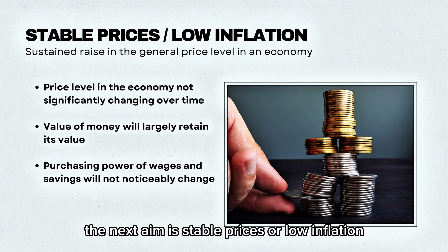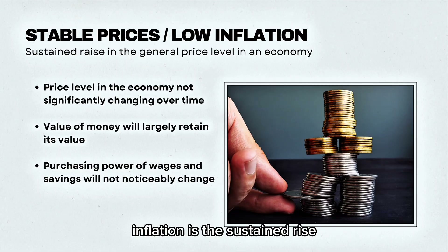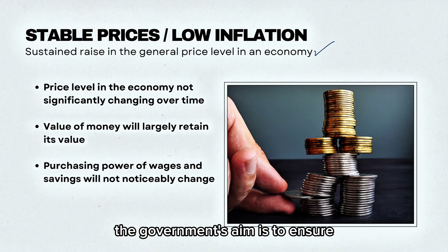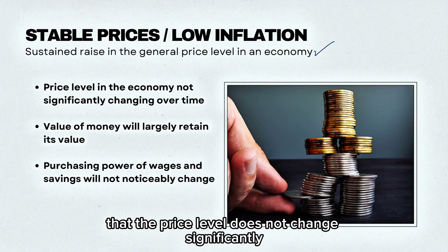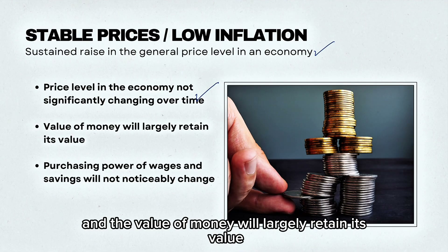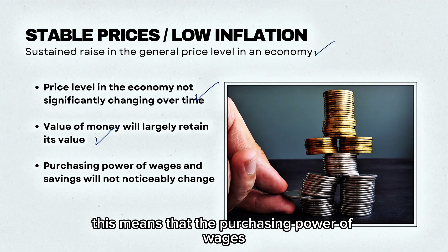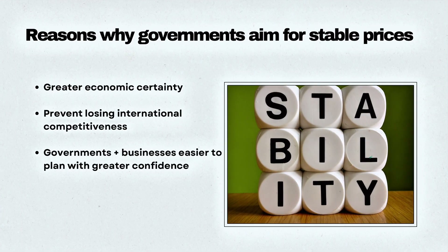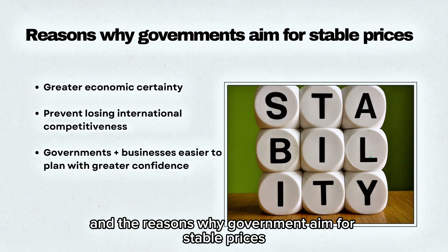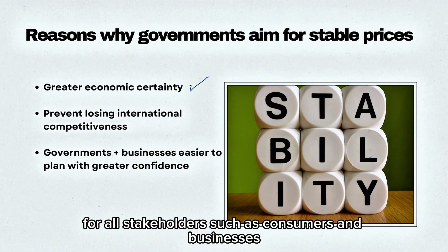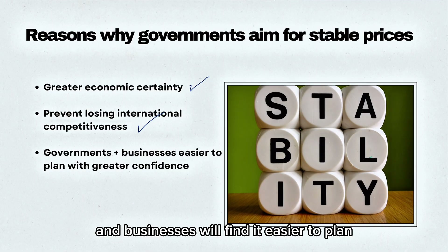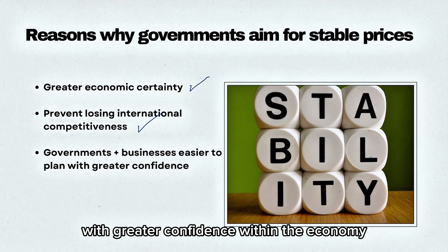The next aim is stable prices or low inflation. Inflation is the sustained rise in the general price level in an economy. The government's aim is to ensure that the price level does not change significantly over time and the value of money will largely retain its value, meaning that the purchasing power of wages and savings will not noticeably change. The reasons why governments aim for stable prices is that there's greater economic certainty for all stakeholders such as consumers and businesses. This prevents losing international competitiveness, and governments and businesses will find it easier to plan with greater confidence within the economy.